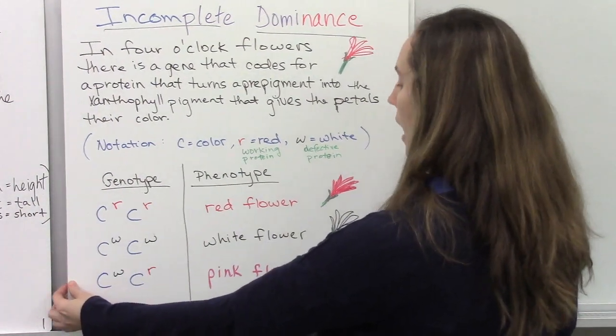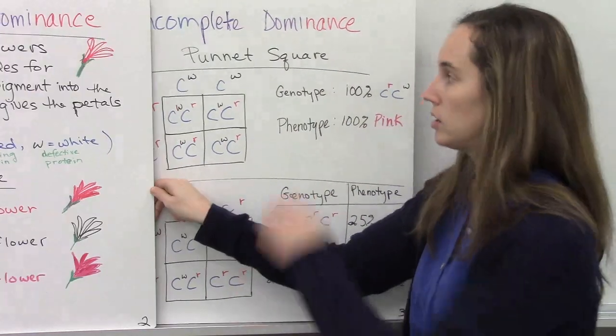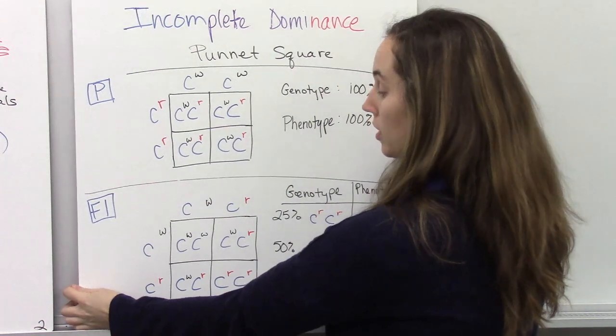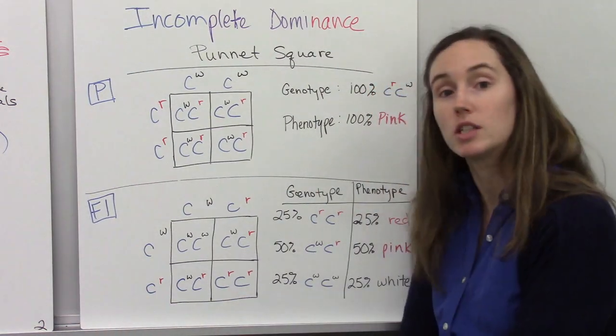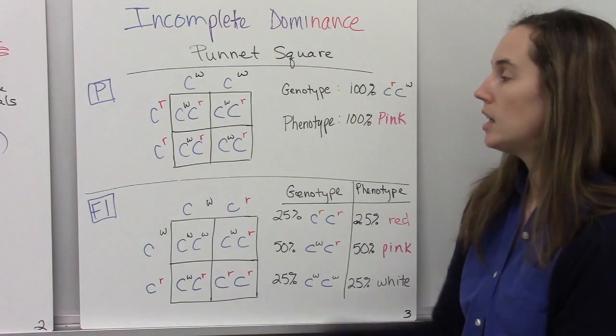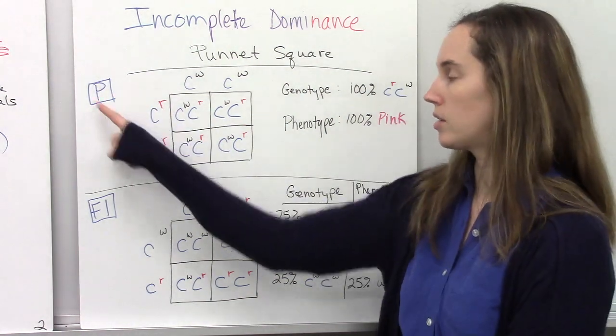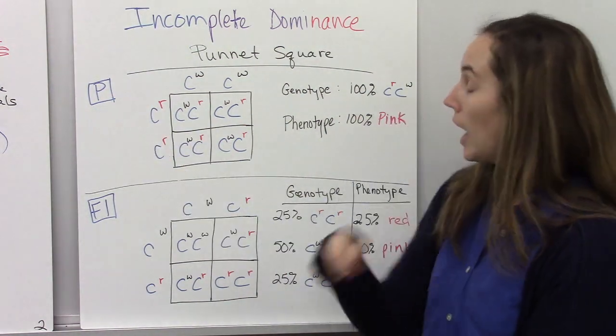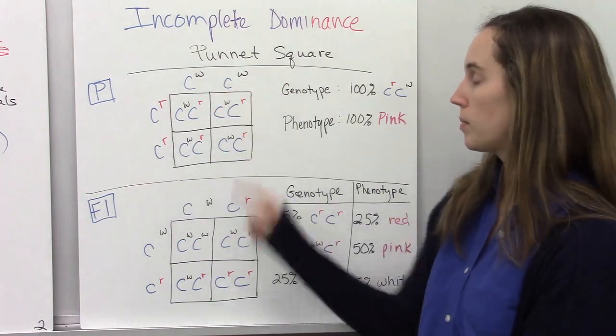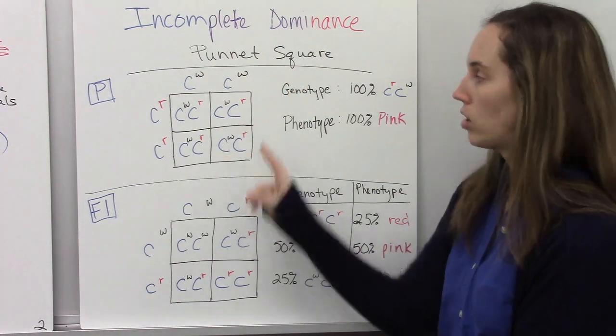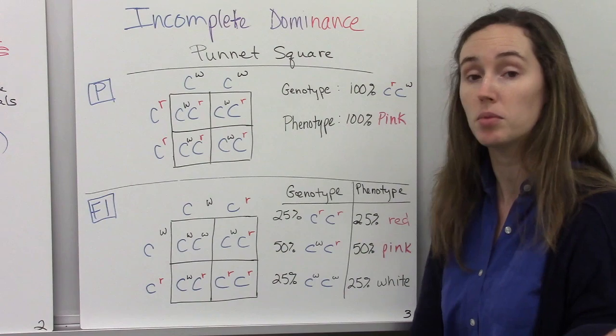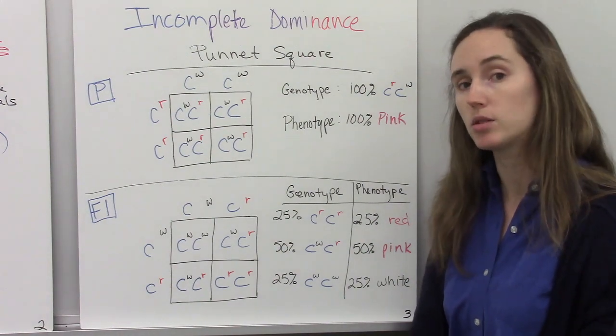Now let's look at using Punnett squares to determine phenotypic and genotypic ratios of offspring following the mode of inheritance of incomplete dominance. So if my parental generation has a homozygous red individual and a homozygous white individual, when they mate, 100% of their offspring will have the heterozygous genotype and they'll all be pink. They'll all show the pink phenotype.